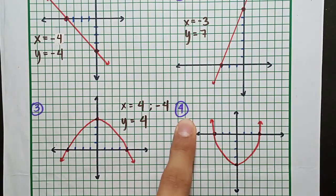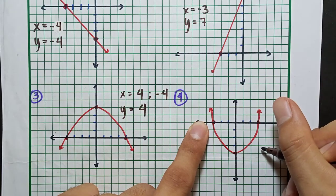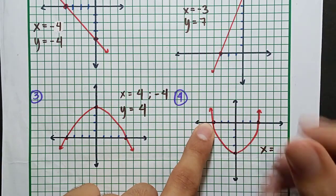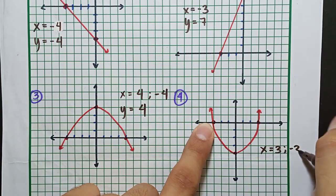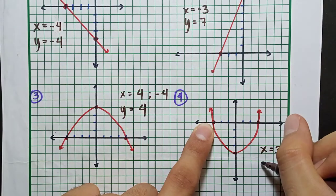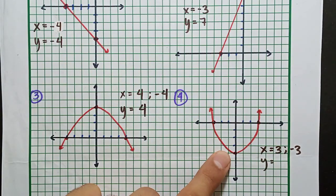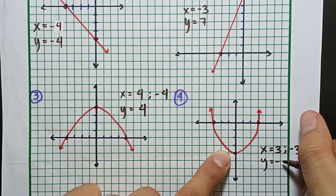Last, for graph number 4, the x-intercepts are at negative 3 and 3. Then for the y-axis, where does the line hit? The y-intercept is at y equals negative 4. So that's all.